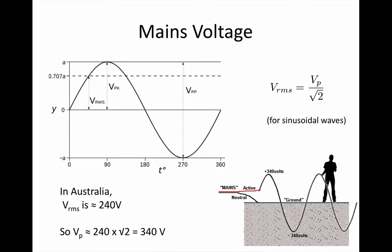I hope you were able to work out that if the RMS voltage is 240 volts at the mains, then that means the peak voltage must be 240 times root 2, which is about 340 volts.